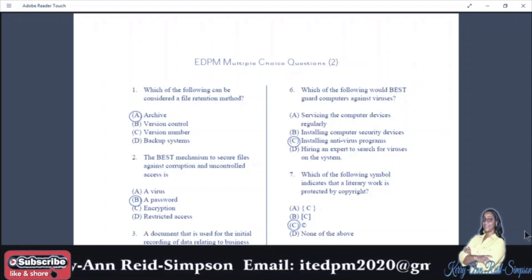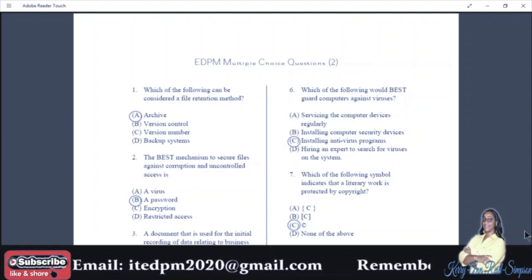Looking at number one: which of the following can be considered a file retention method? A: Archive, B: Version control, C: Version number, D: Backup systems. And your answer is A.